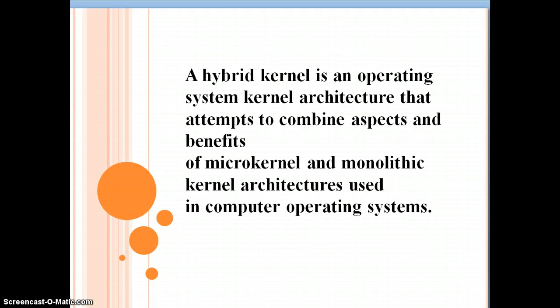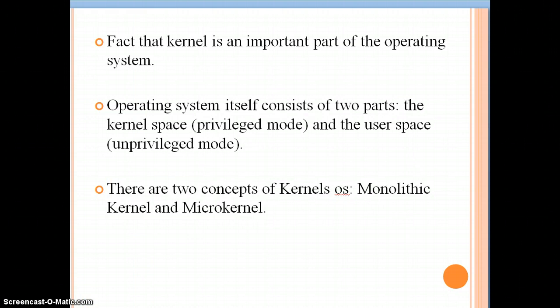As we all know, the operating system manages the hardware and the software, and the kernel is the important part of the operating system. The hybrid kernel operating system is formed by two operating systems — the monolithic kernel and the micro kernel — combining all the benefits and aspects of both. The kernel is said to be the heart of the operating system. The operating system consists of two parts: the kernel space and the user space.